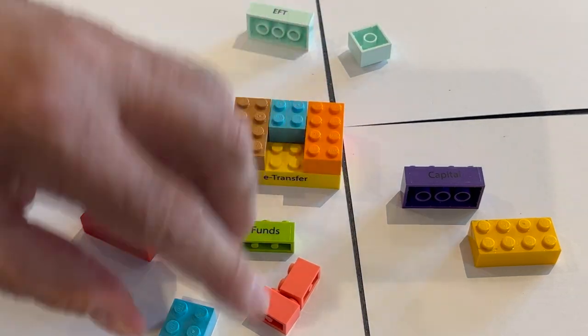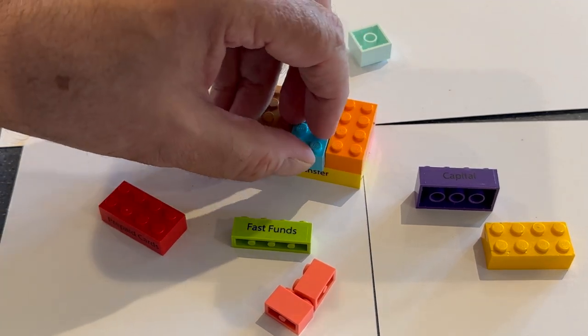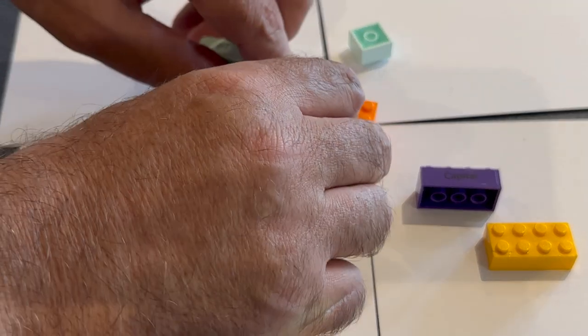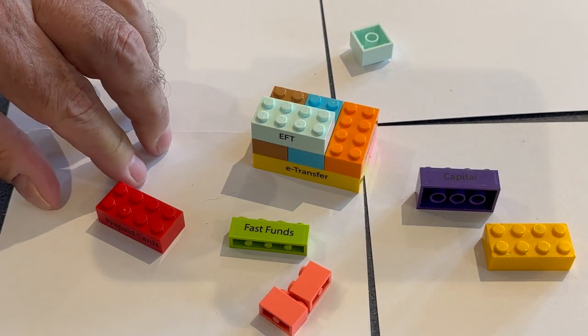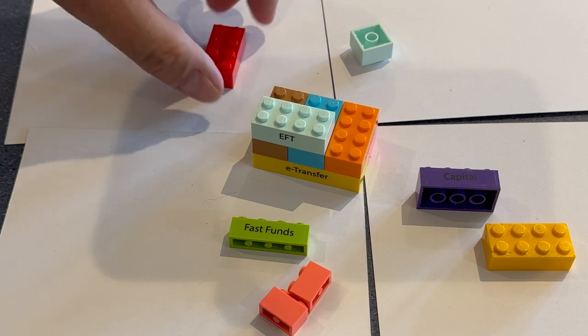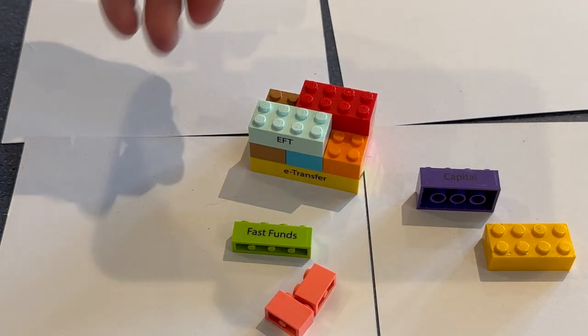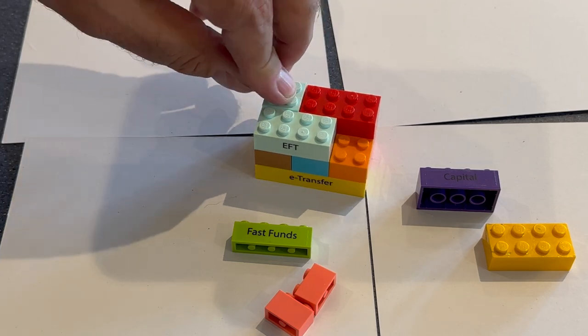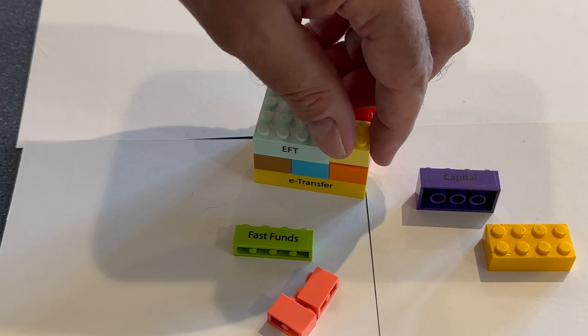That can be HR or something in the middle. EFT we want, obviously. So let's put some EFT in it. And we definitely want prepaid cards. So let's have prepaid cards there as well. And that can be the purchasing department or something. Let's put that in.